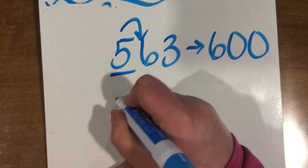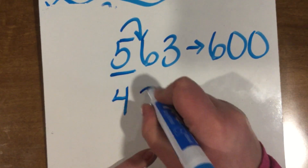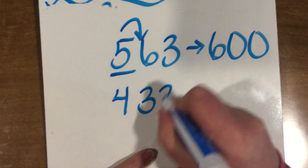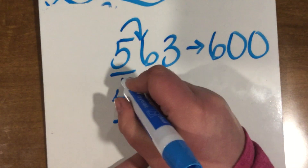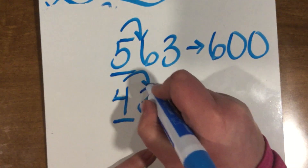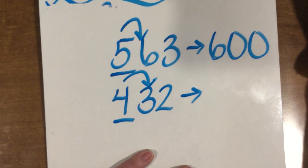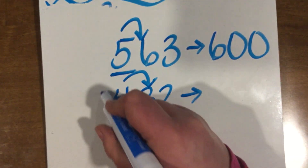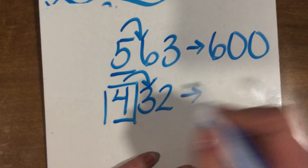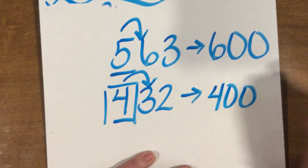If I had one that was lower, look next door — four or less, or five or more? It's four or less, so we're going to let it rest on this hundred. So it'd be four hundred.